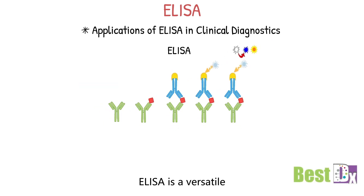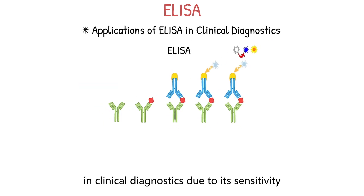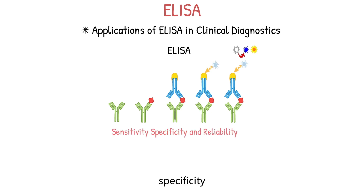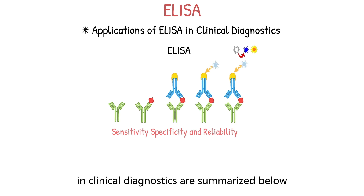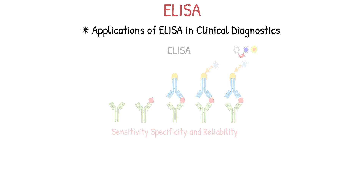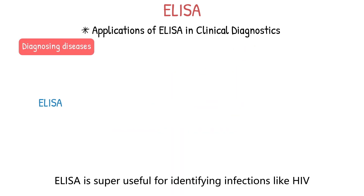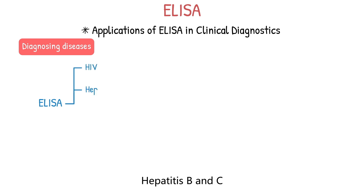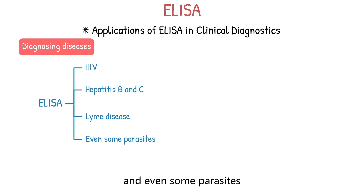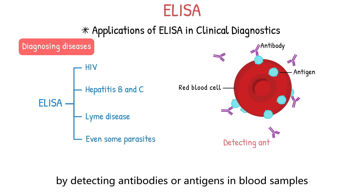ELISA is a versatile and widely used technique in clinical diagnostics due to its sensitivity, specificity, and reliability. Key applications include diagnosing diseases — ELISA is useful for identifying infections like HIV, hepatitis B and C, Lyme disease, and even some parasites, by detecting antibodies or antigens in blood samples.